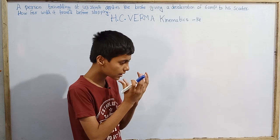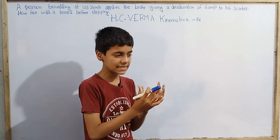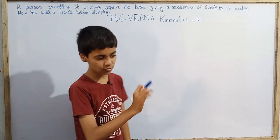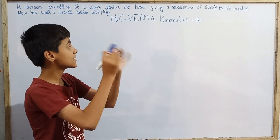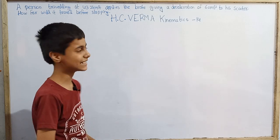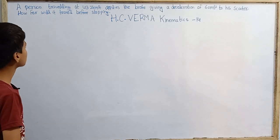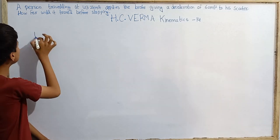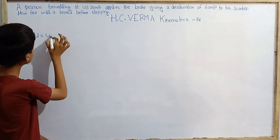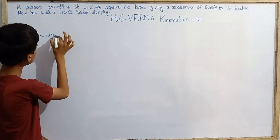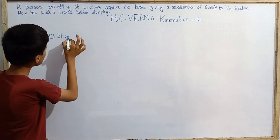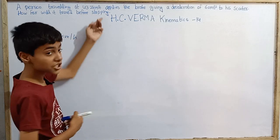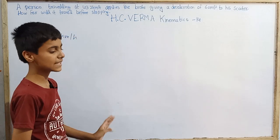We need to find how far the scooter will travel before stopping. When the brake is applied at that moment, we track until the scooter finally stops. Let's begin. The initial speed is 43.2 km per hour. There may be some confusion here — we haven't explicitly labeled which speed is initial.